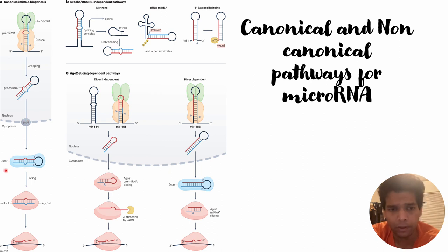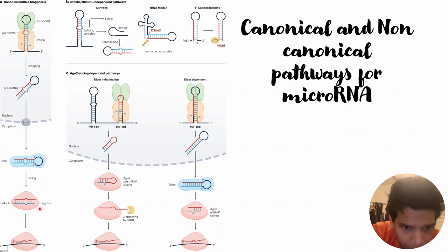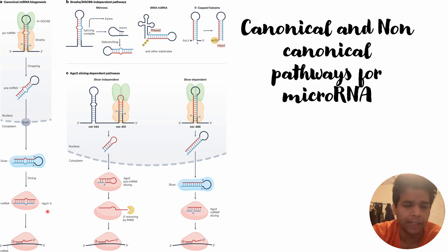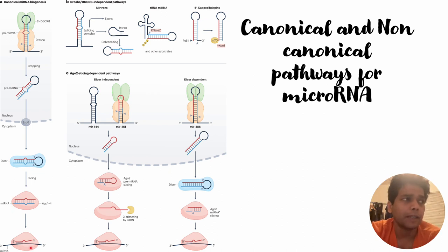With the help of the microprocessor Drosha, this pre-micro RNA is cleaved off and moved into the cytosol of the cell. There, with the help of Dicer, the hairpin is removed and the micro RNA attaches to AGO to form the micro RNA RISC complex.